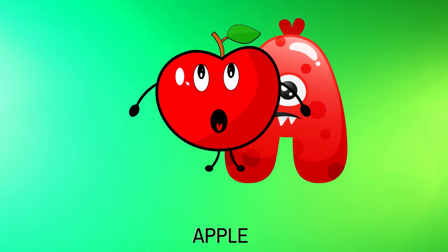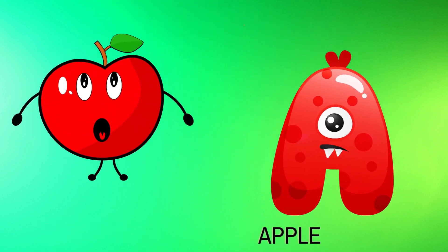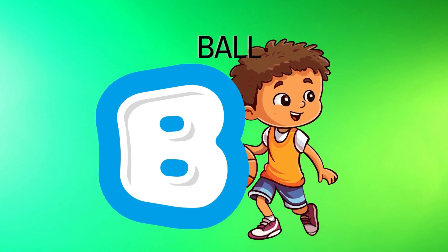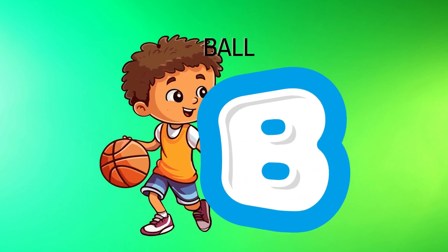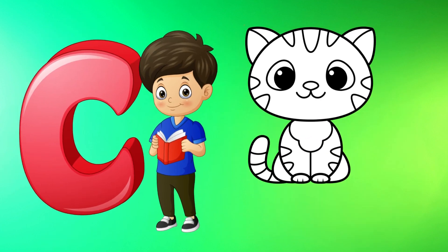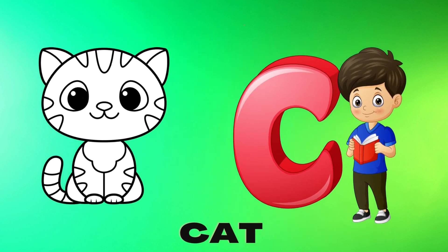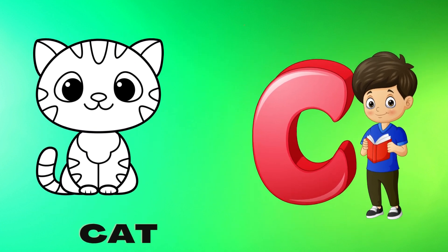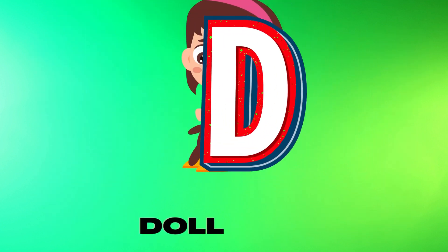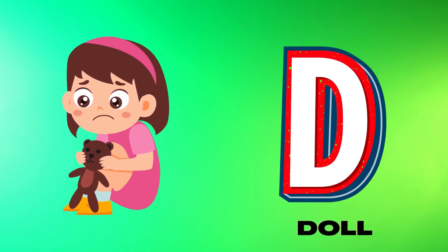A is for apple, a-a-apple. B is for ball, b-b-ball. C is for cat, c-c-cat. D is for doll, d-d-doll.